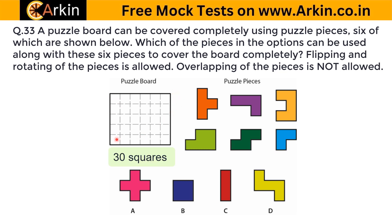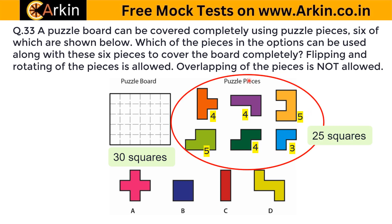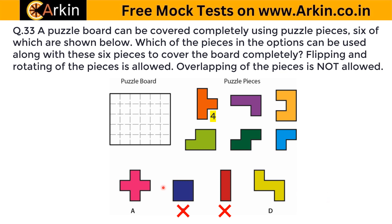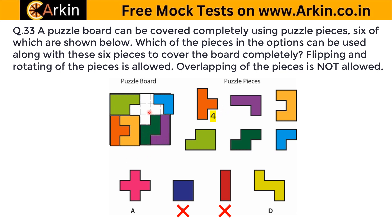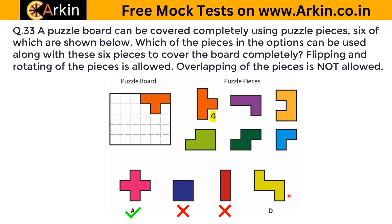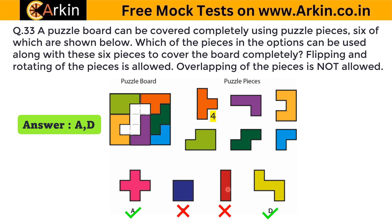First, let's see how many square pieces there are. There are 30 squares — six here and five here makes 30. Now, in the given six pieces: four squares here, four here, five, five, four, and three — adding all these gives 25 squares total. So to cover the board we need five more squares. In option A there are five squares; in option B there are four squares; here again four squares; and here again five squares. Because we need five squares, options B and C will not work — they cannot cover it completely. We have to choose between A and D, and both will be correct.